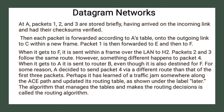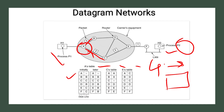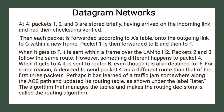At router A, packets 1, 2, and 3 are briefly stored, having arrived on the incoming link and had their checksums verified. Each packet is then forwarded according to the table onto the outgoing link to C within a new frame. Packet 1 is forwarded to E and then to F, and when it gets to F it is sent over the LAN to host H2. Packets 2 and 3 follow the same route.